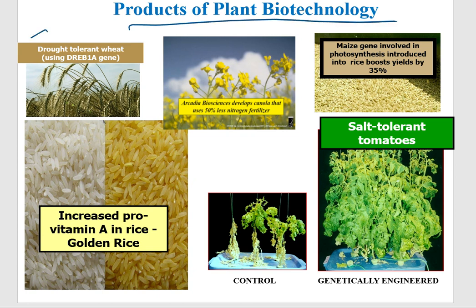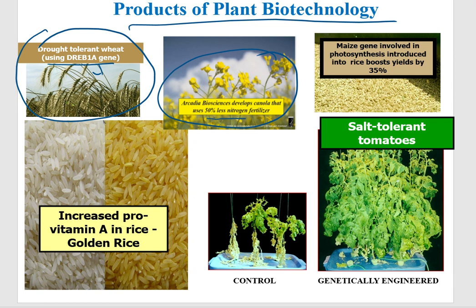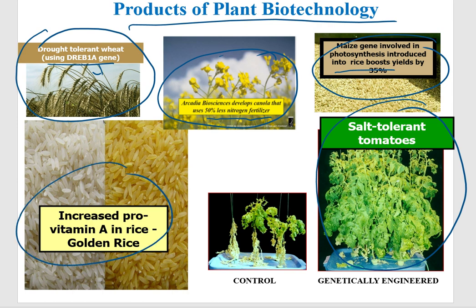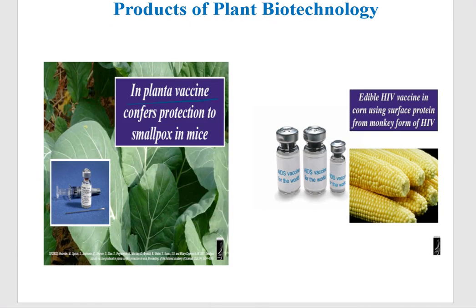Some biotechnology plant products: drought-resistant wheat was produced by installing a gene called DREB gene. A canola plant was developed that can grow well on 50% less nitrogen fertilizer. Maize genes involved in photosynthesis were used to boost rice yield by 35–50%. Salt-tolerant tomatoes were developed. Vitamin A content was increased in golden rice. A plant vaccine — in planta vaccine — provided smallpox protection in mice. An edible HIV vaccine was installed in maize.